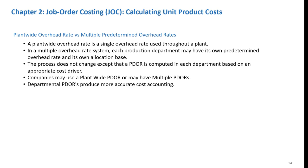So far, we have assumed that a single predetermined overhead rate can be used to apply overhead costs — referred to as a plant-wide overhead rate, which is a single overhead rate used throughout a plant. Many companies use a multiple overhead rate system, where each production department may have its own predetermined overhead rate and its own allocation base. The decision to use a plant-wide or multiple predetermined overhead rate is a management decision. Companies using departmental predetermined overhead rates will find cost calculations produce more accurate results than simply using a plant-wide overhead rate.